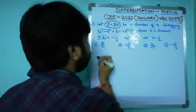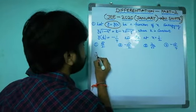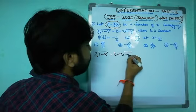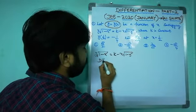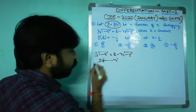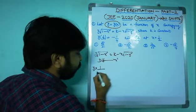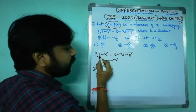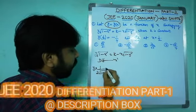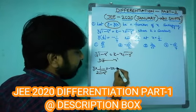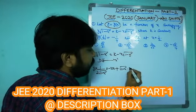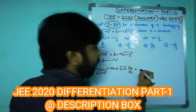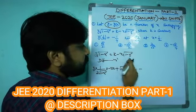Taking y√(1-x²) = k - x√(1-y²) and differentiating with respect to x: on the left side, applying the product rule — y times the derivative of √(1-x²) by chain rule gives -x/√(1-x²), plus √(1-x²) times dy/dx equals zero (derivative of constant k) minus the right side.